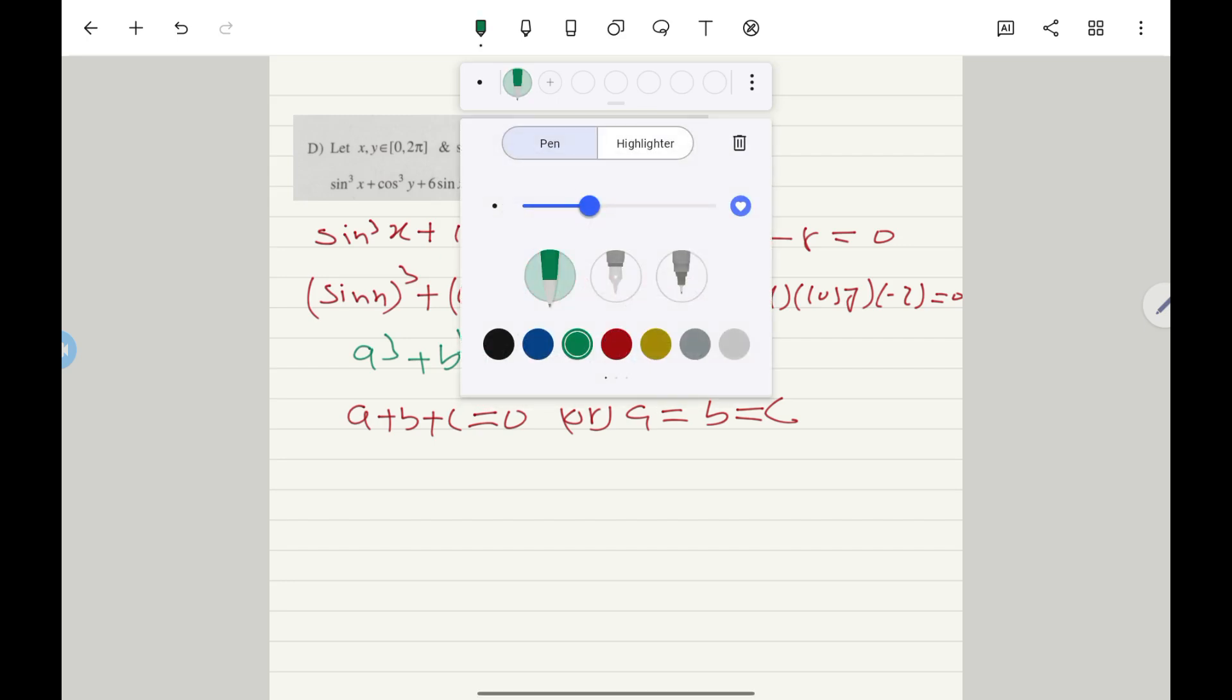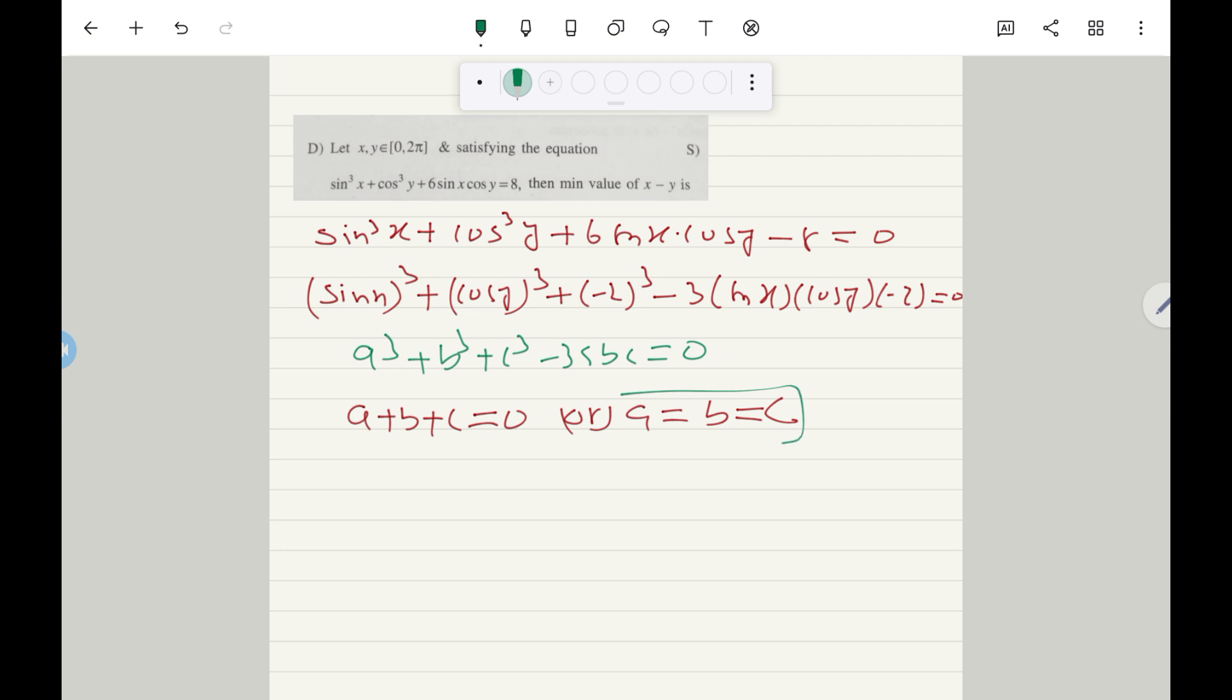But in this problem students observe, this a = b = c never happens because a means here sinx, b means cosy, c means actually minus 2. You know that sinx range is -1 to 1, cosy range also -1 to 1, that's why for any value of x and y those values are not equal to minus 2.